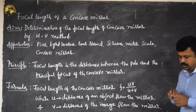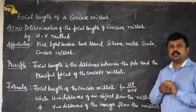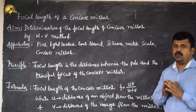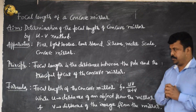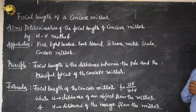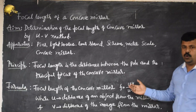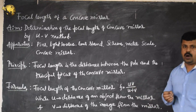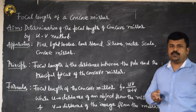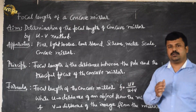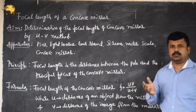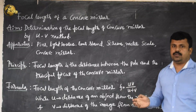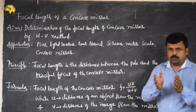The principal focal length is the distance between the pole and the principal focus of the mirror. The formula we are making use of is F equals UV divided by U plus V, where U refers to object distance and V refers to image distance. By finding out the object distance and image distance, we can find out the focal length of the given concave mirror.